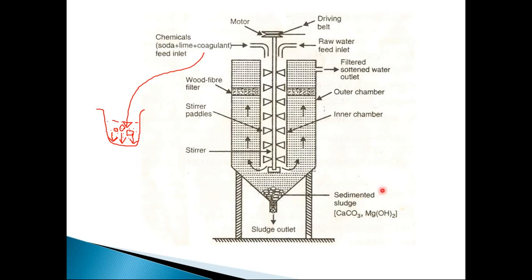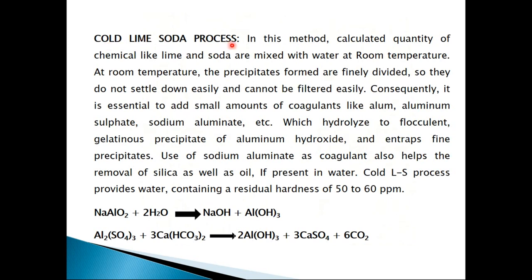In the cold lime-soda process, a calculated quantity of lime and soda are mixed with water at room temperature. At room temperature, the precipitates formed are finely divided and do not settle down easily and cannot be filtered. Consequently, it is essential to add small amounts of coagulant like alum, aluminum sulfate, or sodium aluminate. These hydrolyze to form a flocculant gelatinous precipitate of aluminum hydroxide which entraps the fine particles, causing them to grow in size and settle down as sludge.